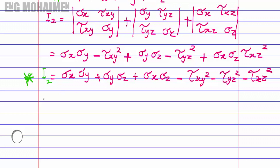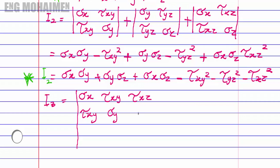We continue to the third invariant equation. I'm going to show you the matrix form: I3 equals the determinant of the 3×3 matrix with sigma x, tau xy, tau xz in the first row; tau xy, sigma y, tau yz in the second row; and tau xz, tau yz, sigma z in the third row.